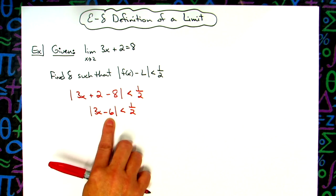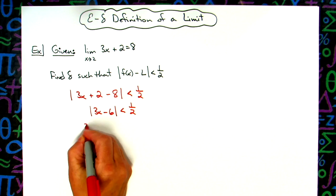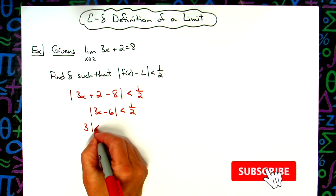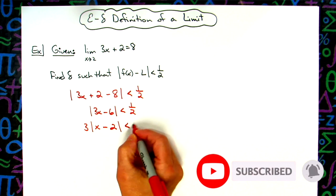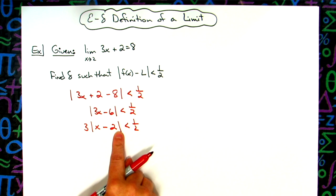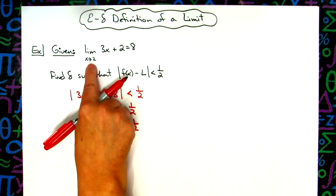So I'm going to factor out a three. If I factor out three, I've got three times absolute value of x minus two, absolute value less than one half.